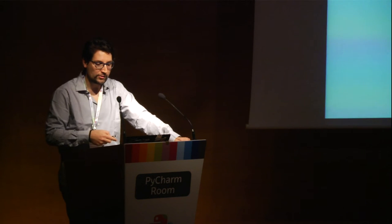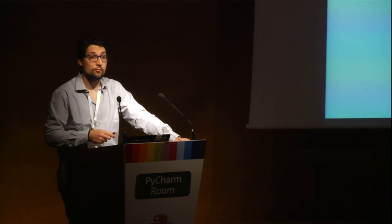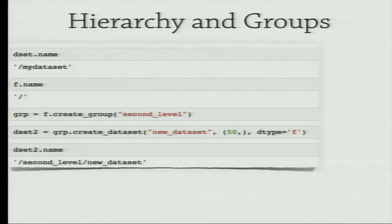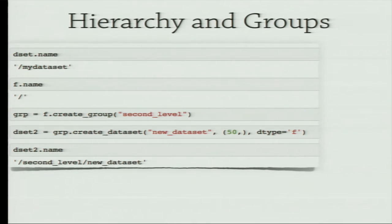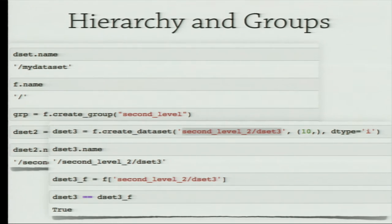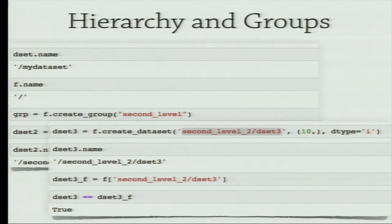An important feature of HDF5 is that we may have hierarchy and groups, so we can structure the information in our file. We start from the root, then create groups, create datasets, and append those datasets to the group. So we have a specific path to follow when accessing data in the structured HDF5 file. We may also create a new dataset directly by specifying the path, and then access those datasets using the path directly rather than going through the group.